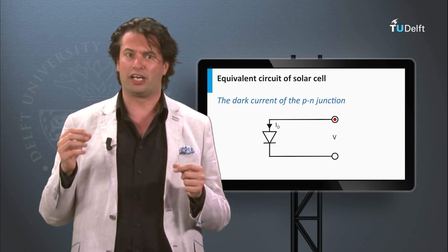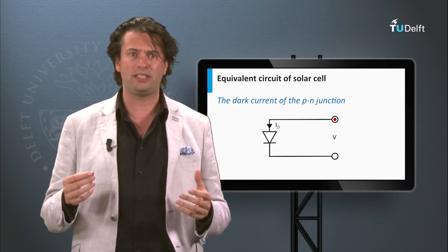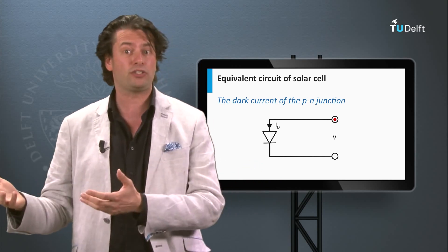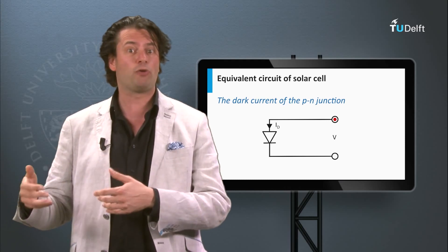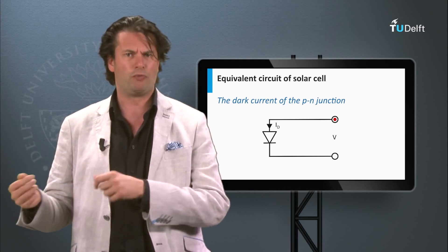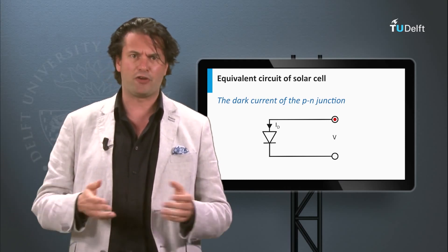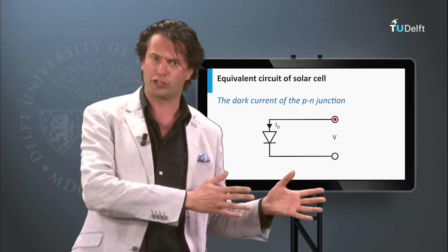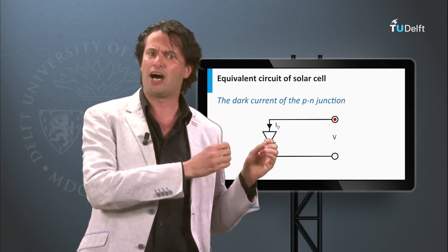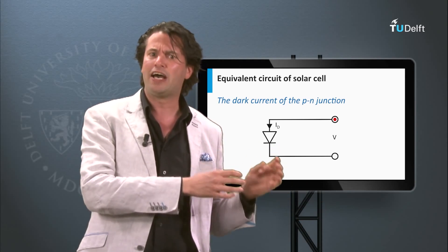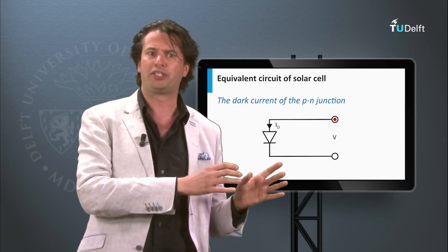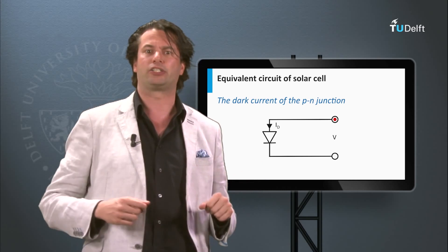A diode is an electrical element that, if you apply a forward bias on it, becomes conductive in one direction, whereas if you apply a reverse bias on it, a diode is hardly conductive and basically blocks the current in the opposite direction.